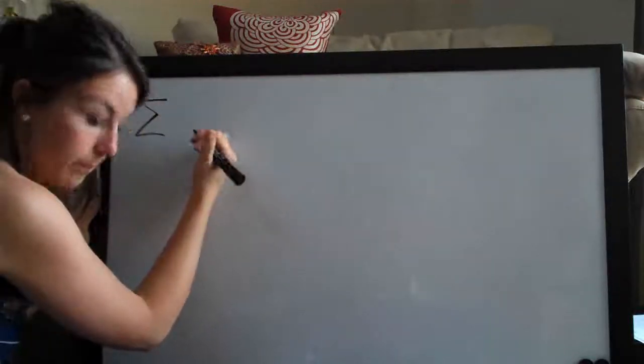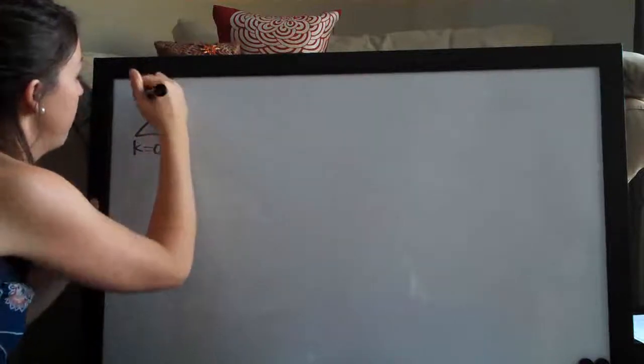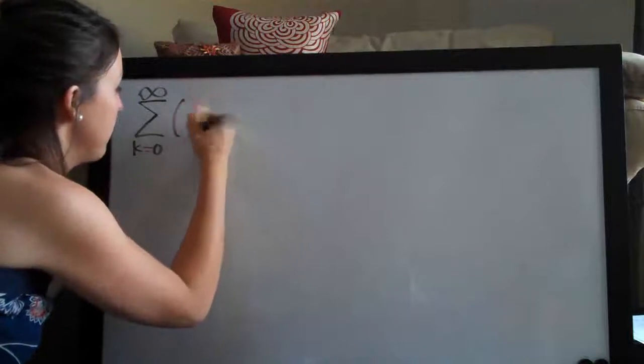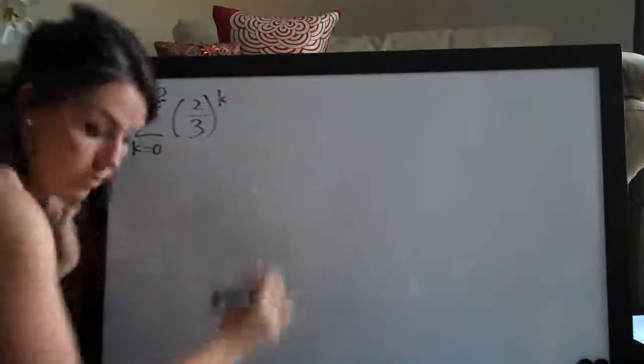So this one looks like this: the sum k equals zero, we're doing the sum to infinity, this is the series, two-thirds to the k.